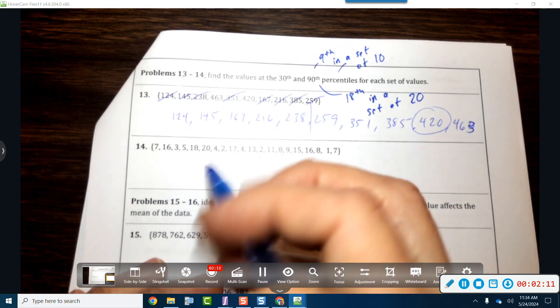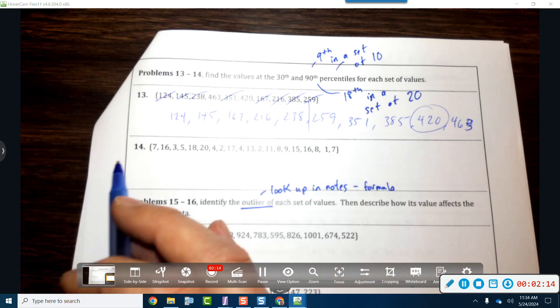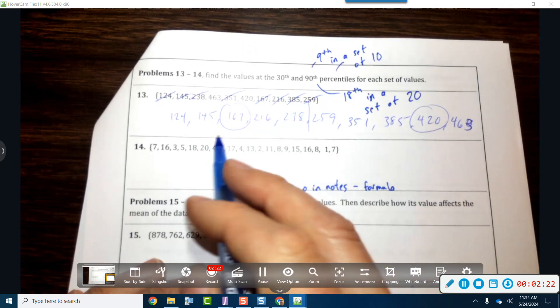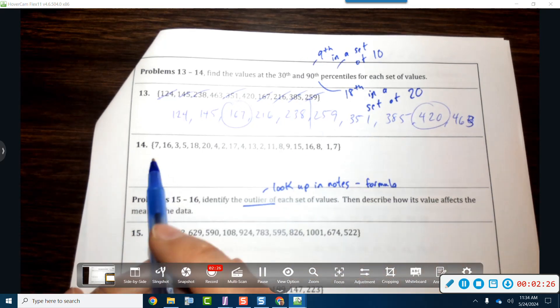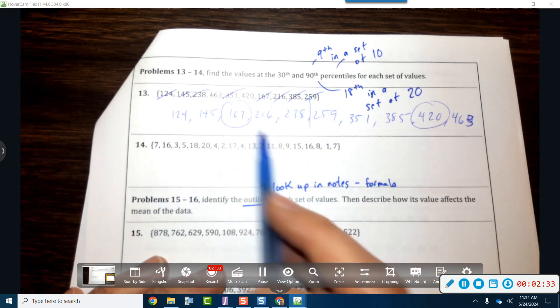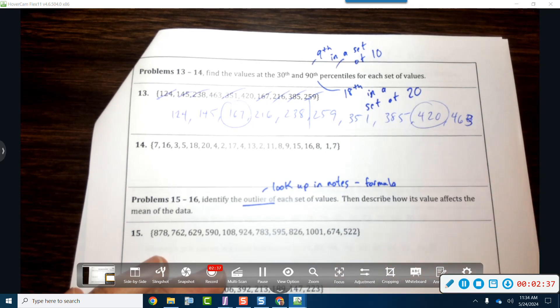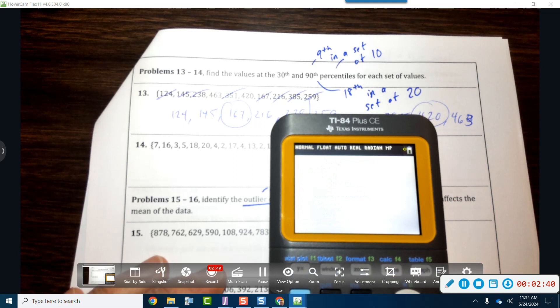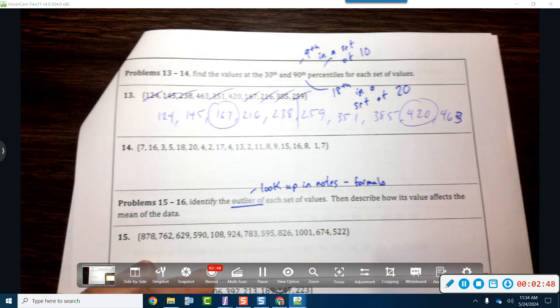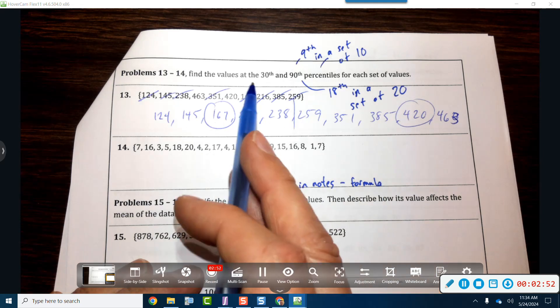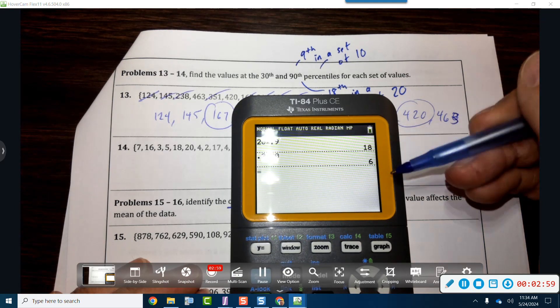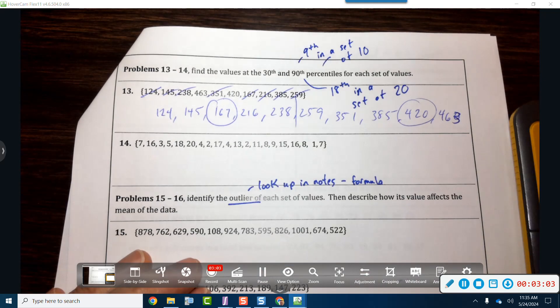Now for this guy, this is going to be a little different because now we have a set of 20. So if you want, oh by the way, that's the 90th. If you want the 30th, that's that guy right there, so 167 is the 30th. 420 is the 90th. Here we would put all those in order, and instead of going to the ninth, since there's 20, you would go to the 18th in a set of 20, because 90 percent of 20 is 18. For the 30th, you'd go to the 6th because the 30th percentile times 20 is the 6th value in the entire set.